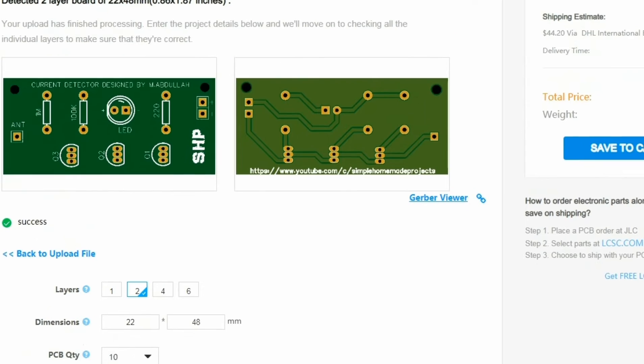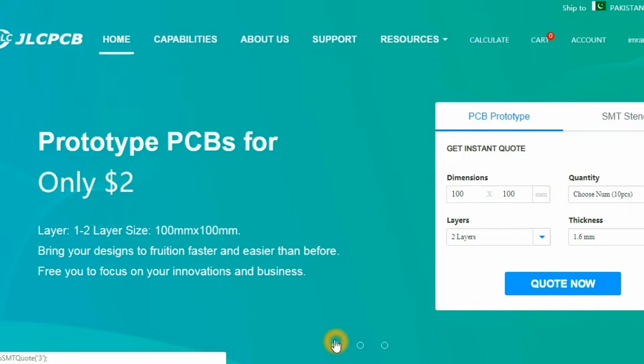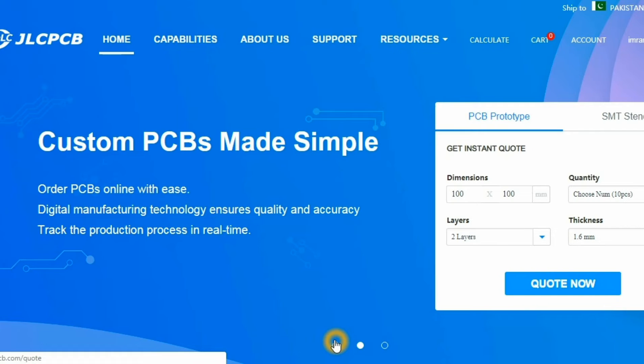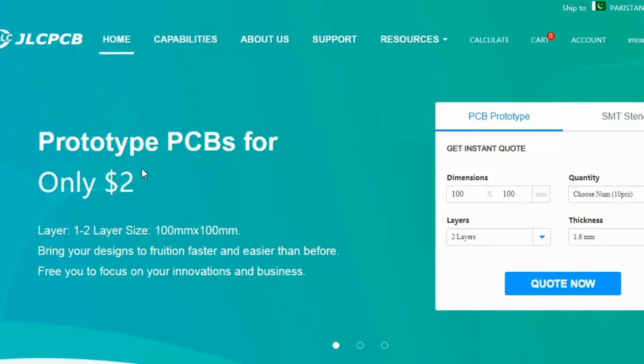So friends, JLCPCB is the largest manufacturer of PCB in China. They are providing 10 PCBs of dimensions 100 by 100 mm in just $2. So don't forget to check out their webpage.